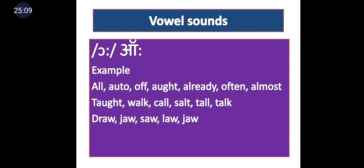Long O — /ɔː/ — an inverted C with a colon in the slant bar. Examples initially: all, auto, off, ought, already, often, almost. Medially: taut, walk, call, salt, tall, talk. Finally: draw, jaw, saw, law. This completes the long /ɔː/ sound examples.